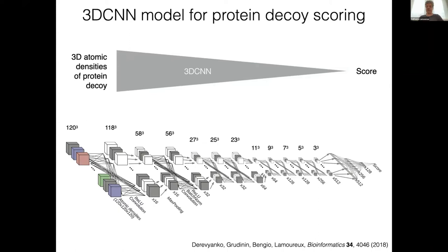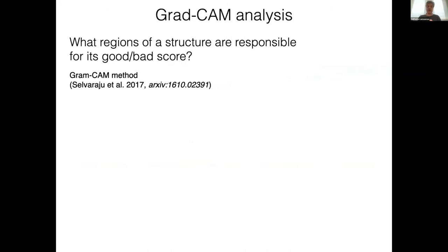The model is fairly complicated, but it's based on an architecture often used for image analysis. Essentially, our input is more or less like a pixelated image of the protein, broken down into multiple channels for different atom types. We then process that and boil it down into a single number, which is our score. This model was kind of our first attempt.